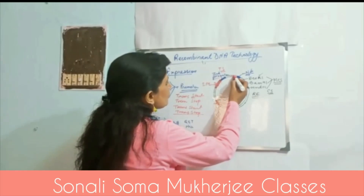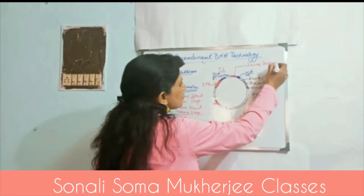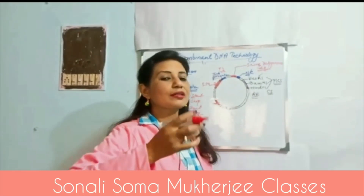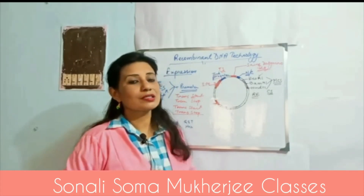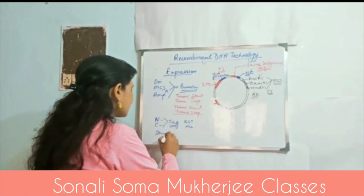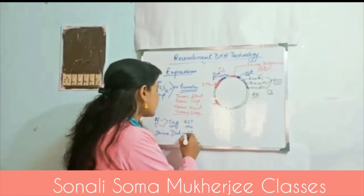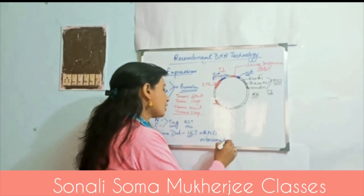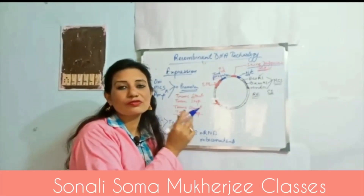Now another very important point in expression vectors: the Shine-Dalgarno sequence. This is a very important factor. The Shine-Dalgarno sequence is the place where the ribosome binds. Once transcription is initiated and mRNA is produced, ribosomes must attach to it. That ribosomal binding site is the Shine-Dalgarno sequence, which provides the sequence by which ribosomal binding can take place via the 16S rRNA ribosomal subunit.